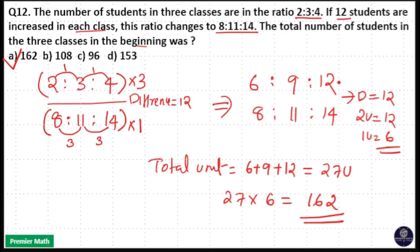Here this is the total unit. In the beginning, 6:9:12 was the original ratio, so the answer is 162.